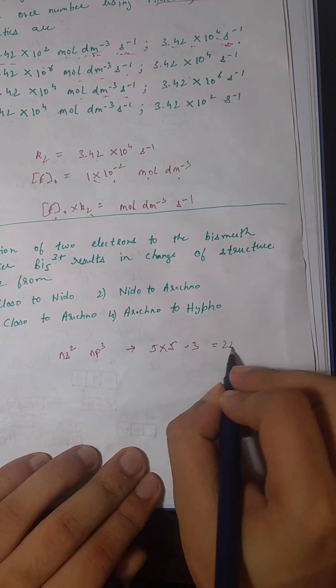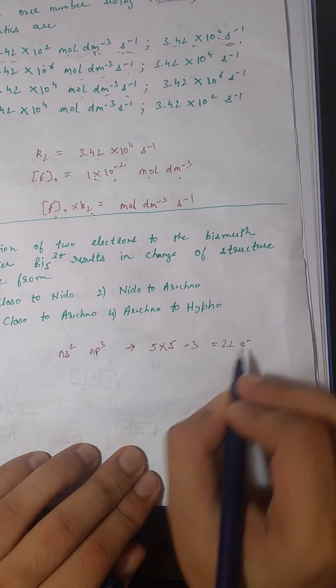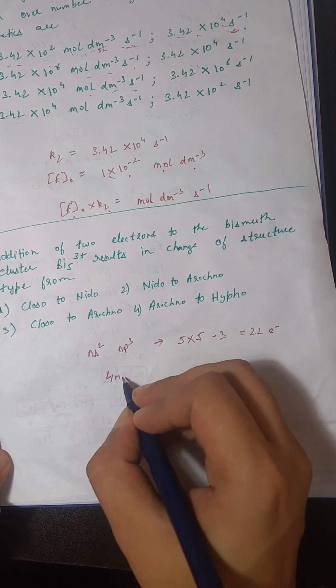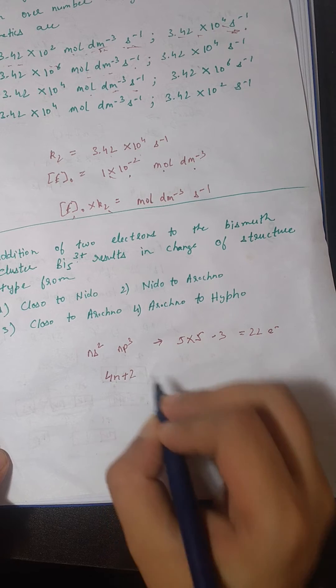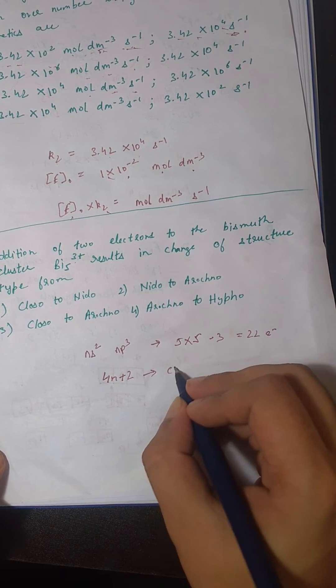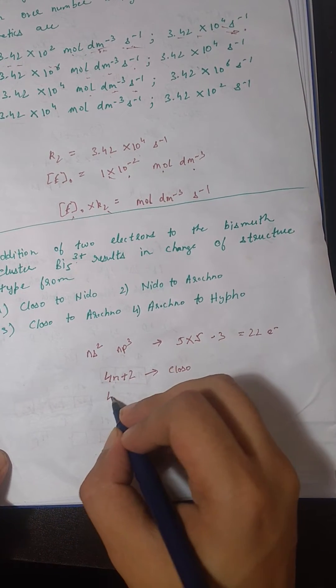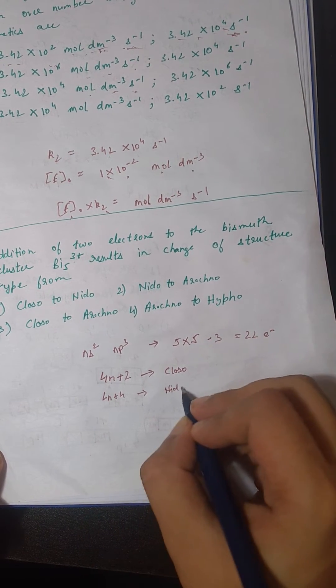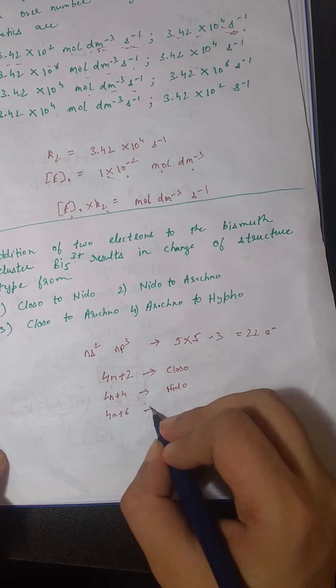There is a 4n rule where 4n+2 is closo, 4n+4 is nido, and 4n+6 is arachno.